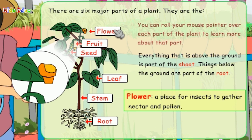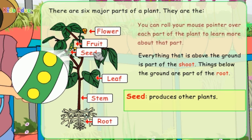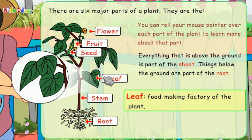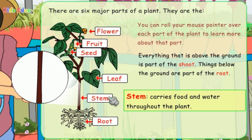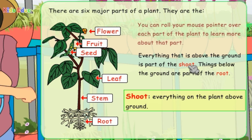Flower: a place for insects to gather nectar and pollen. Fruit: carries seeds. Seed: produces other plants. Leaf: food-making factory of the plant. Stem: carries food and water throughout the plant. Root: the underground parts of the plant. Shoot: everything on the plant above ground.